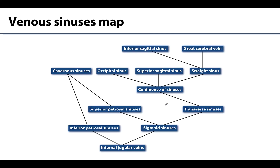Here is a schematic of the dural venous sinus drainage. The inferior sagittal sinus joins with the great cerebral vein to form the straight sinus, which eventually makes its way to the confluence of sinuses. From the confluence, the transverse sinuses turn into the sigmoid sinuses, which then drain into the internal jugular veins. I highly recommend creating your own version of this schematic for studying, and jotting down notes about where each particular dural venous sinus is located.